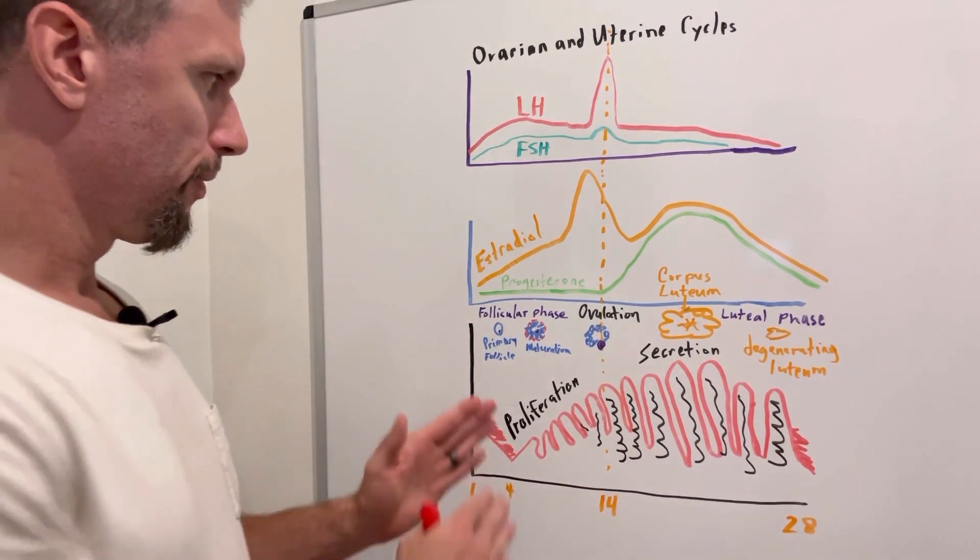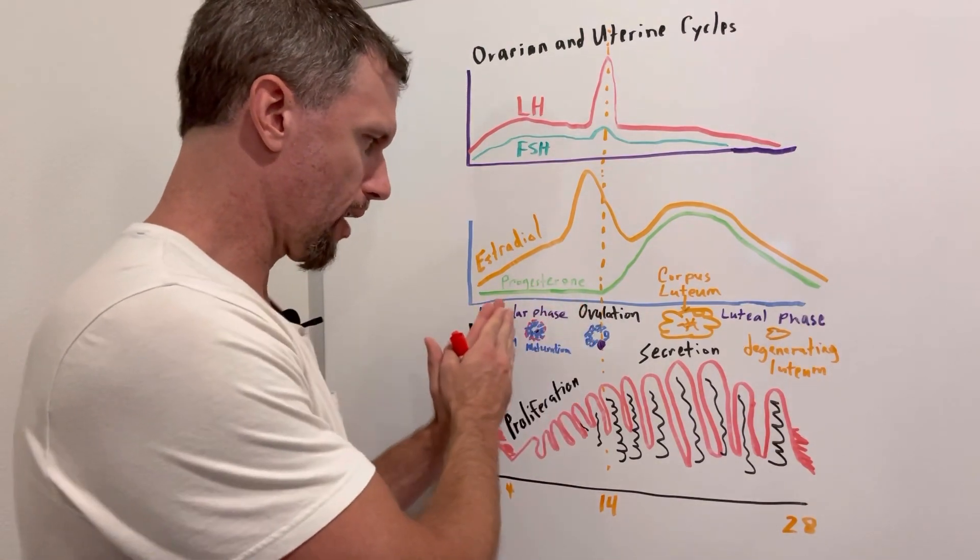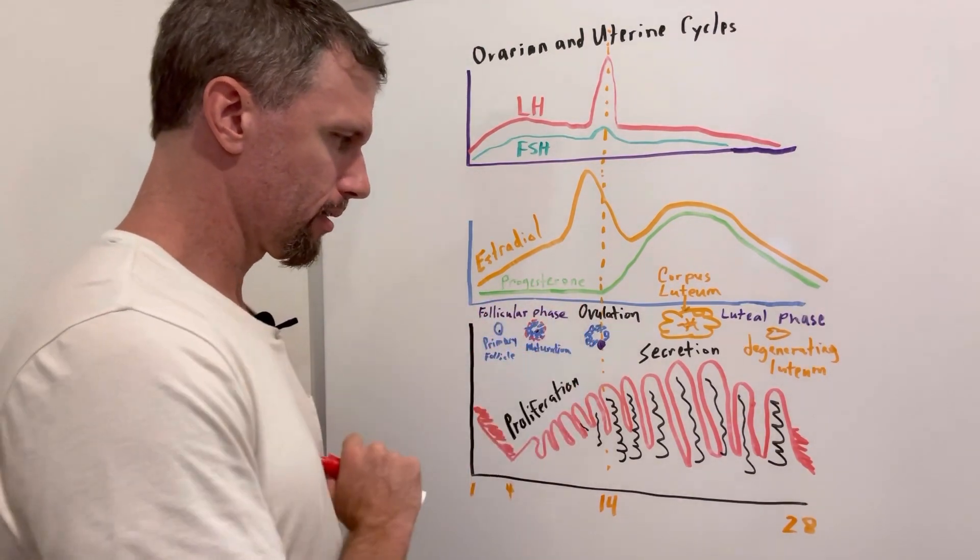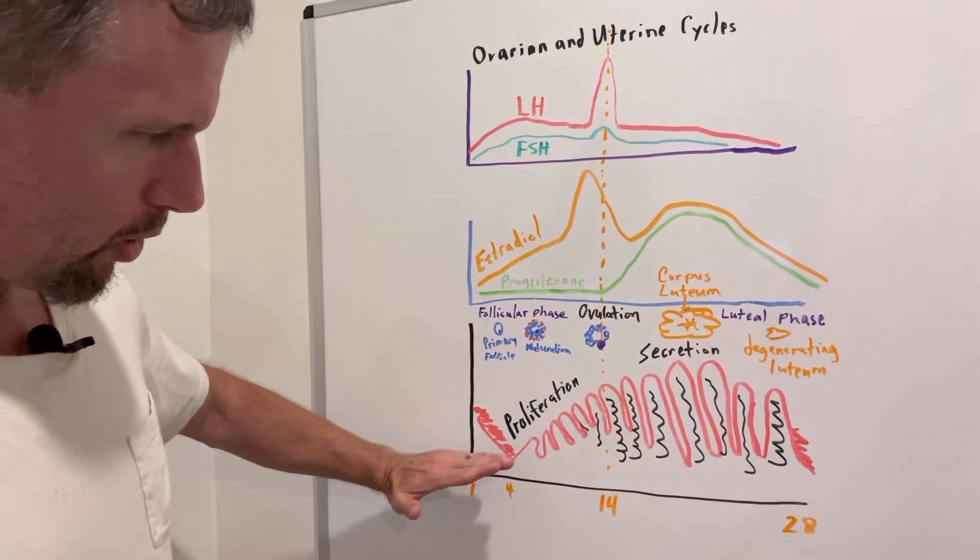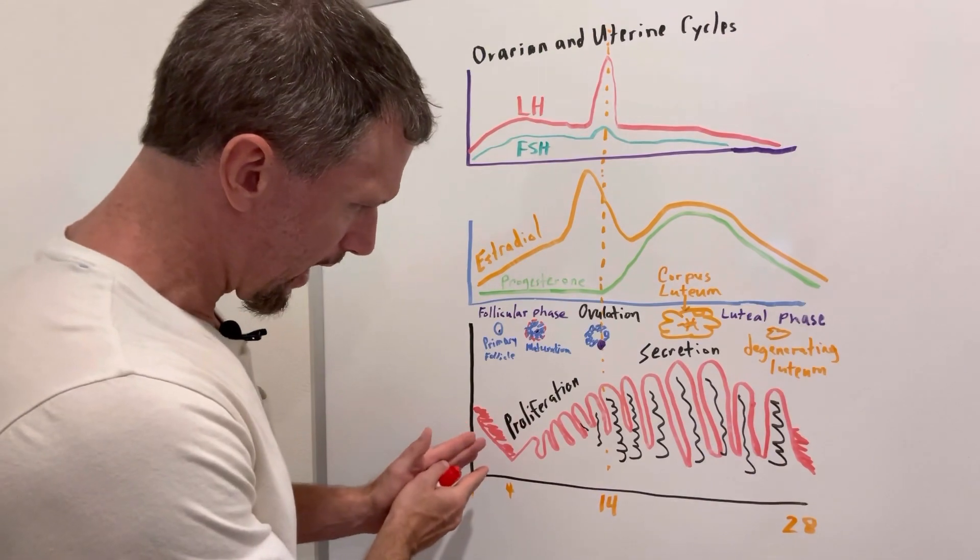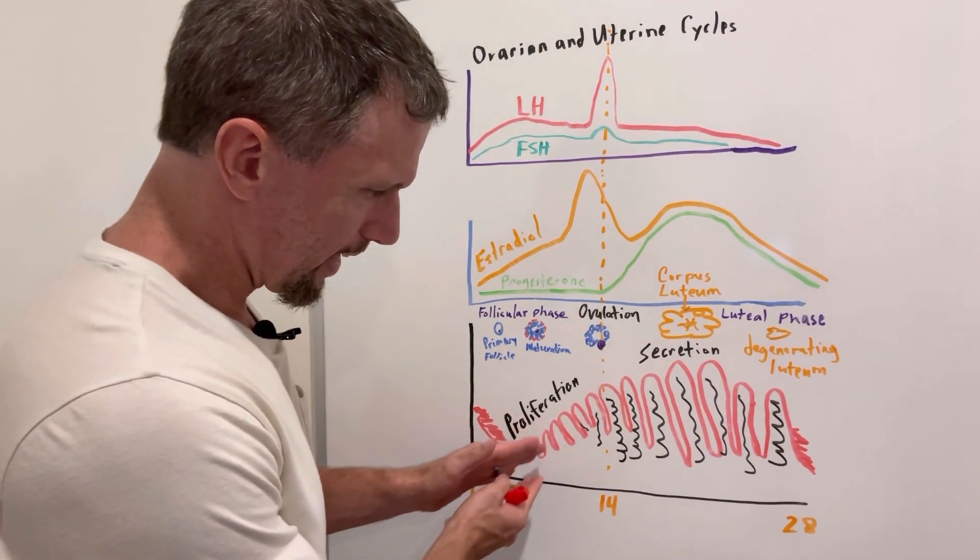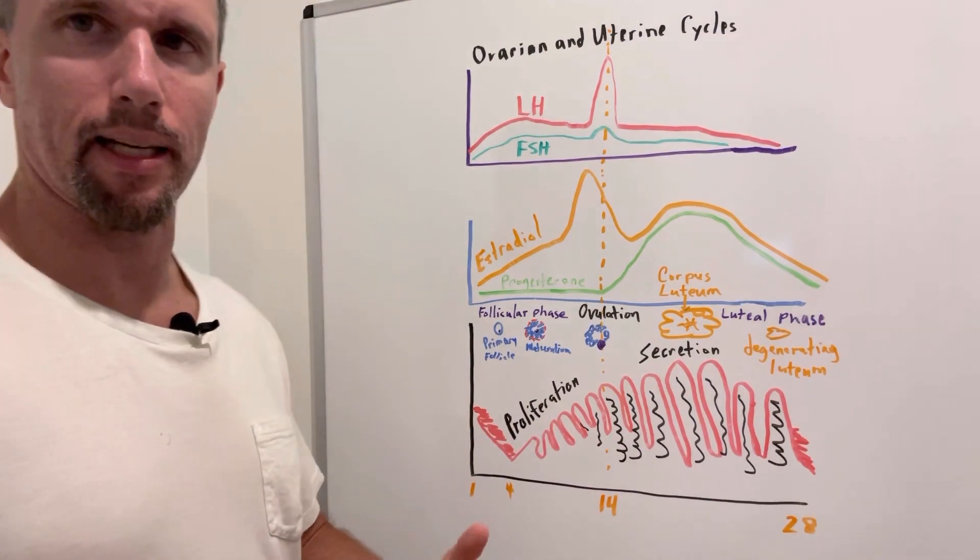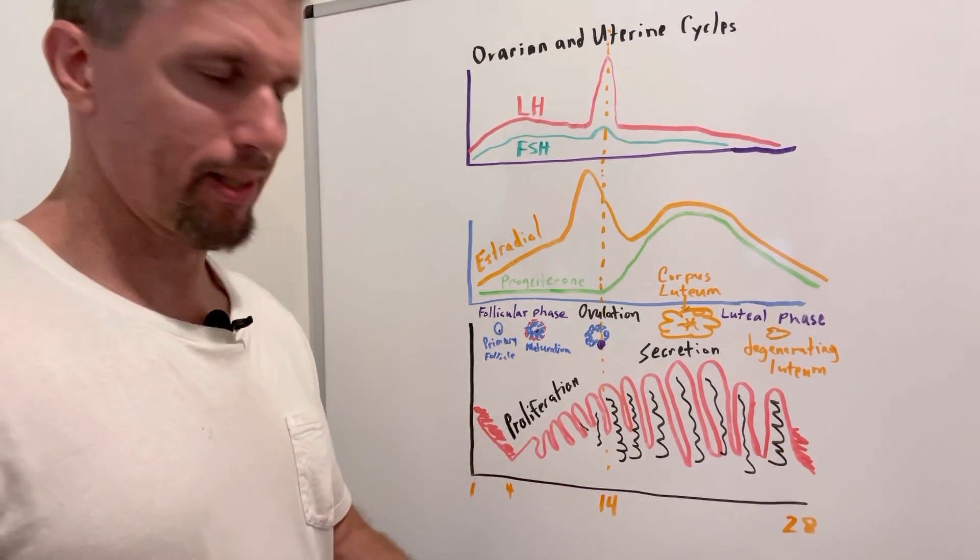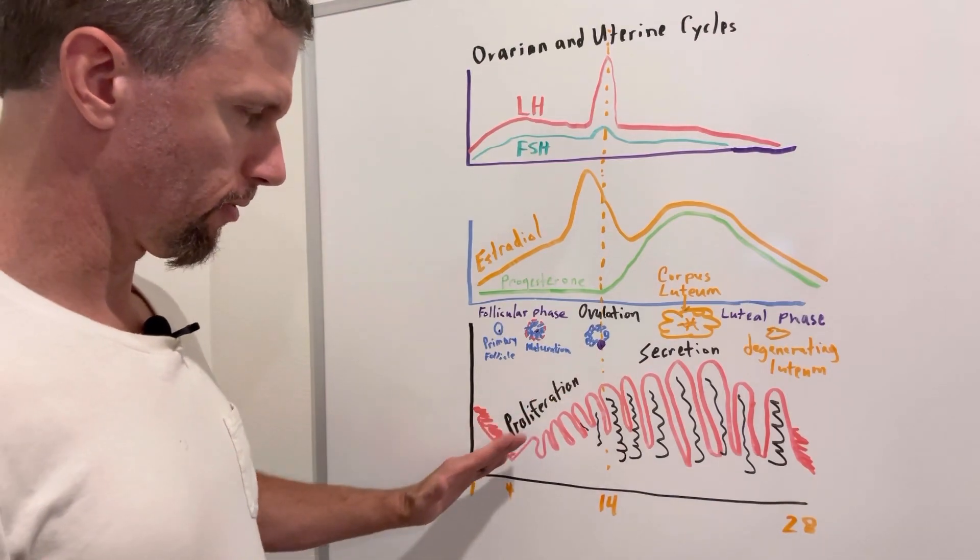So this whole first 14-day period of the ovarian cycle is called the follicular phase. Whereas when the uterus, what's happening in the uterus, uterine cycle is as that estrogen increases, it increases, it thickens the endometrium. You start to get more tissue. You have mitosis and thickening of that endometrium. It's called the proliferative phase or proliferation phase.